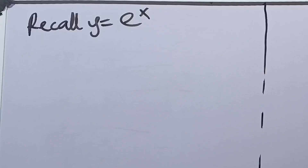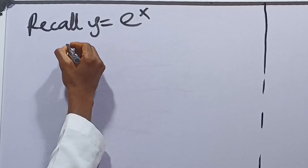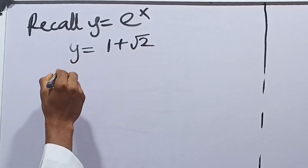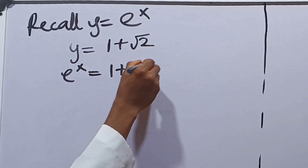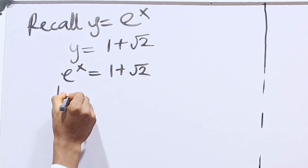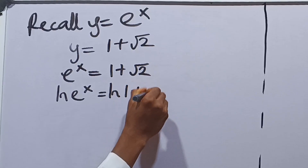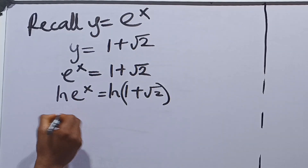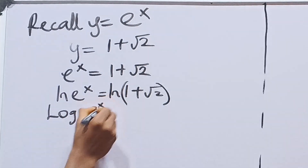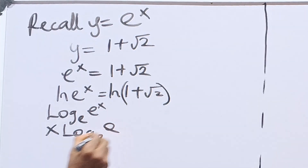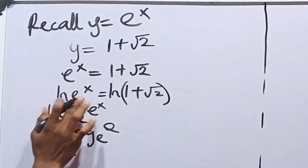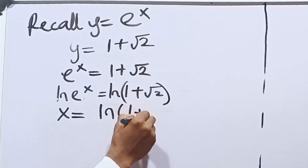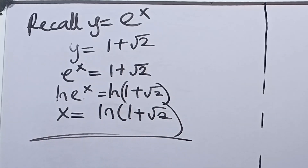Recall that y equals e raised to the power x, and our valid y equals 1 plus root 2. So e raised to the power x equals 1 plus root 2. Taking the natural log of both sides: ln of e raised to the power x equals ln of 1 plus root 2. Since ln of e raised to the power x equals x times log base e of e, which equals x, the final answer is x equals ln of 1 plus root 2.